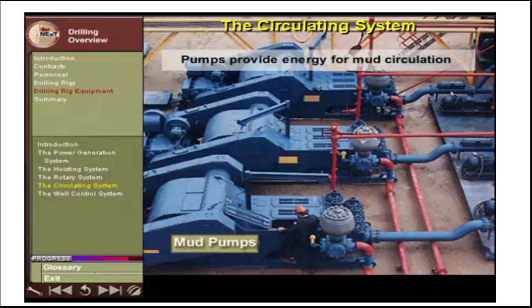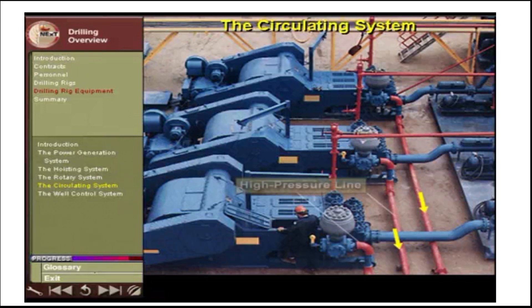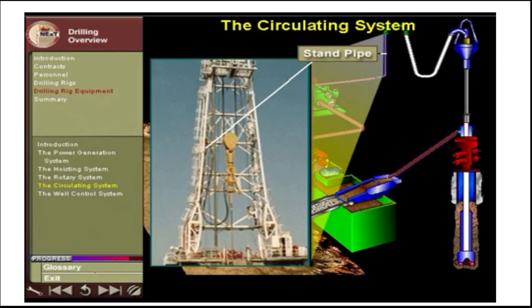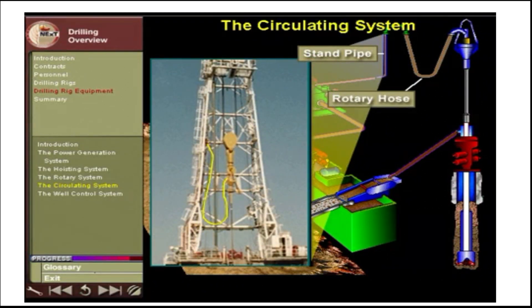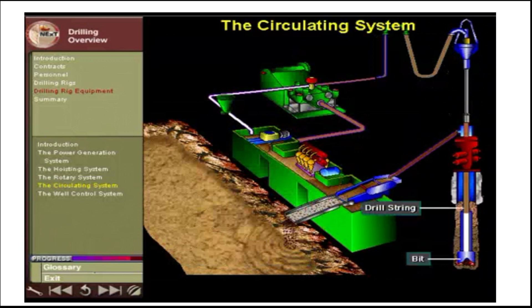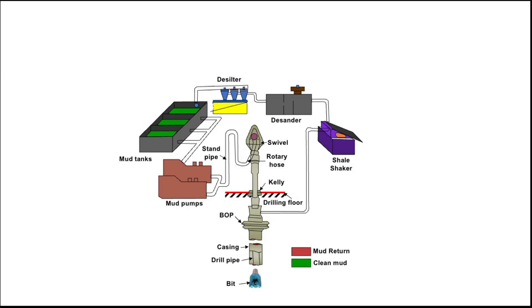Clean mud is picked up from the mud tanks by positive displacement plunger pumps. These powerful pumps increase the mud pressure to thousands of pounds per square inch, providing the energy to circulate the mud. High pressure lines carry the mud from the pumps to the rig floor, where it passes through the standpipe, the flexible rotary hose, the swivel, and the hollow kelly, then continues down the drill pipe. The flow path goes: mud tanks → mud pumps → standpipe → rotary hose → swivel → kelly → drill string → bit → annulus → return line or flow line → shale shaker → desander → desilter → and back to mud tanks.